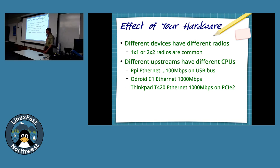A 1x1 phone could connect to a 3x3 AP, but you're going to be limited by the 1x1 on the phone. Exactly — yes, they're backwards compatible.